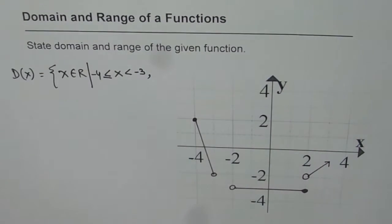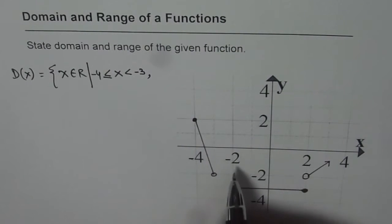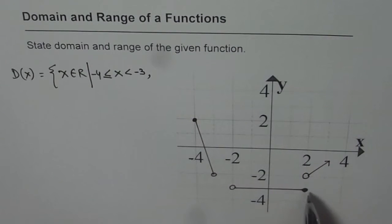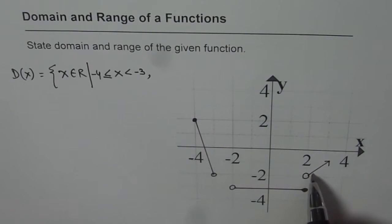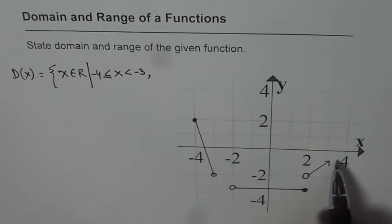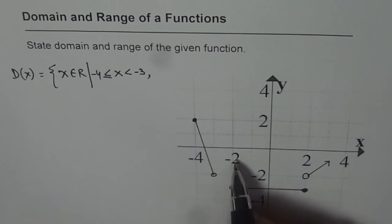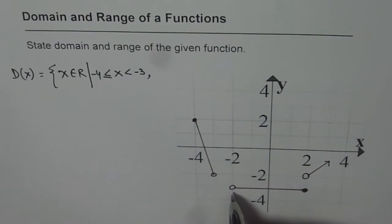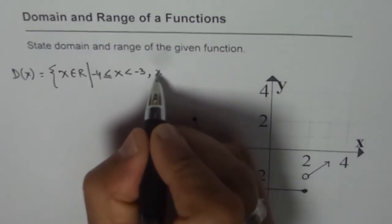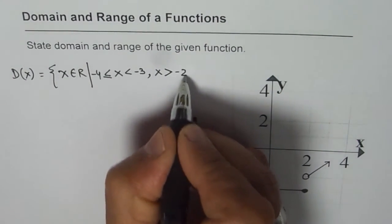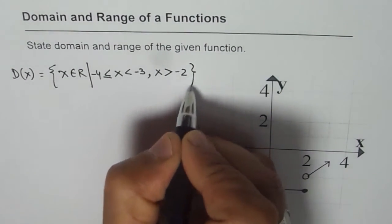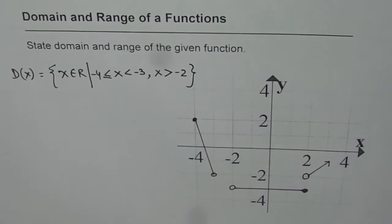That is the first piece. For the second piece, we are talking about from minus 2 to 2, and then at 2 it continues — that shows continuation till infinity. So we can say x is greater than minus 2, where minus 2 is not included. So x is greater than minus 2, and that becomes the domain for this particular function.